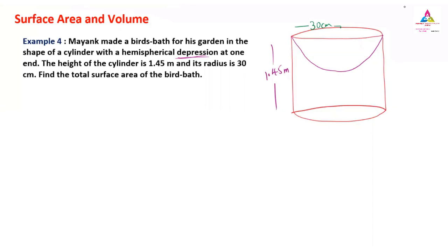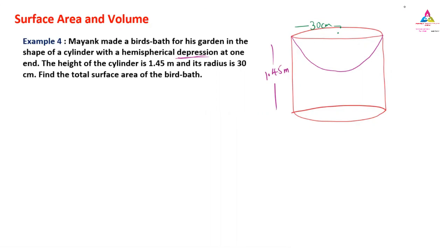One interesting thing to note: in the textbook solution they have taken pi equals 22 by 7. Now the problem asks us to find the total surface area, so what formula will we use to find the total surface area?